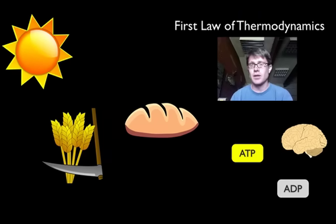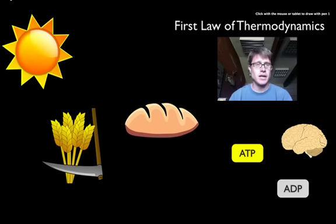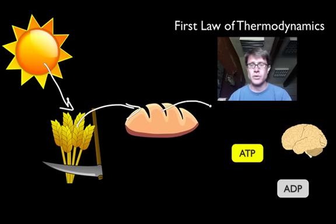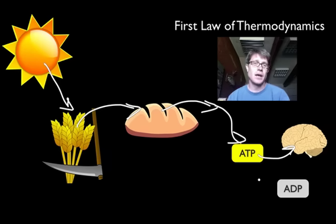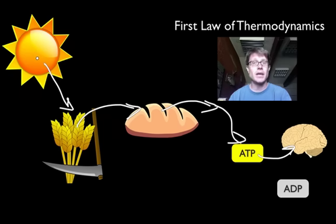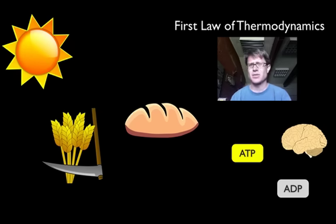There are two thermodynamic laws to briefly cover. The first law of thermodynamics says that energy can neither be created nor destroyed, but it can be transferred. Energy from the sun is converted to energy in plants, in food — we eat that, convert it to ATP, and use that energy to maintain order. All that energy you're using right now originally came from the sun, and it will eventually end up as heat or a lower form of energy.